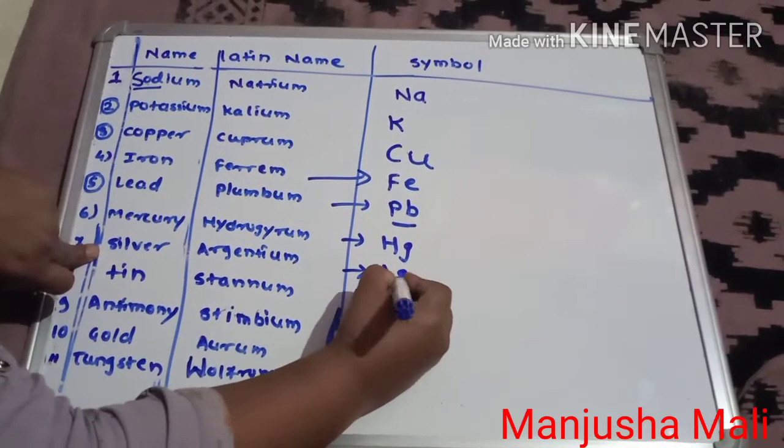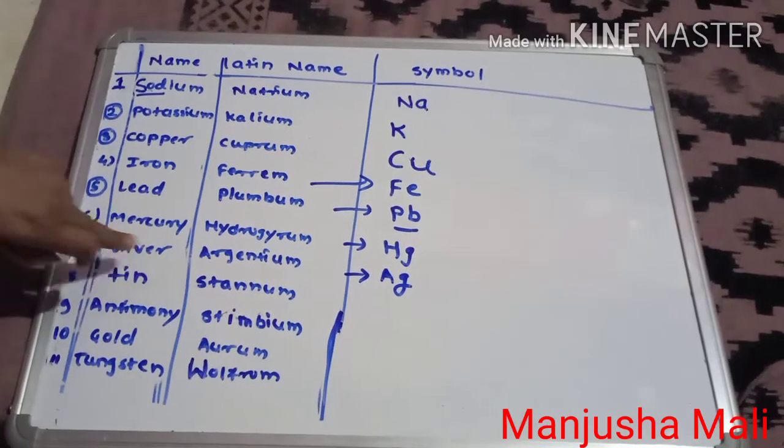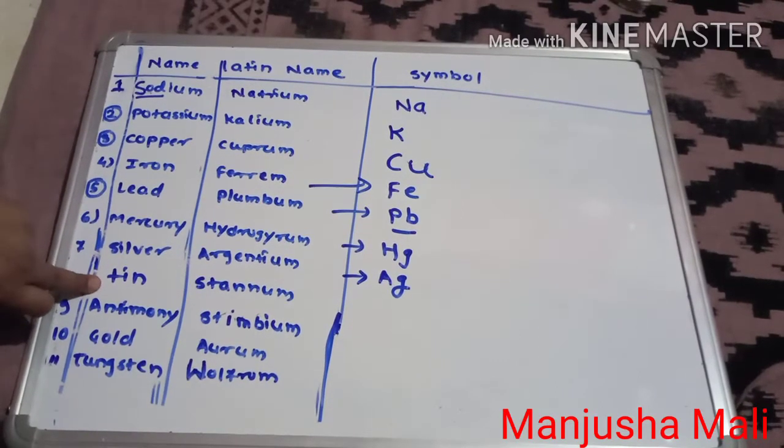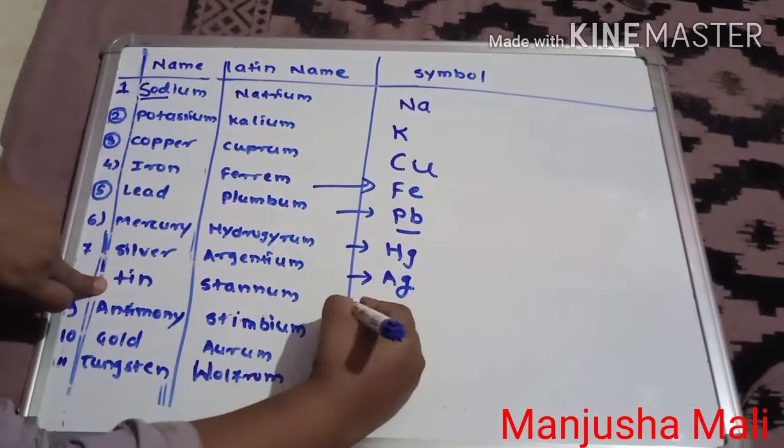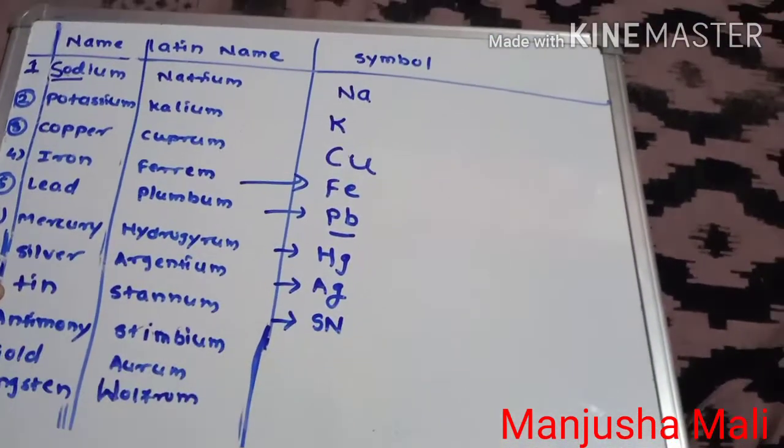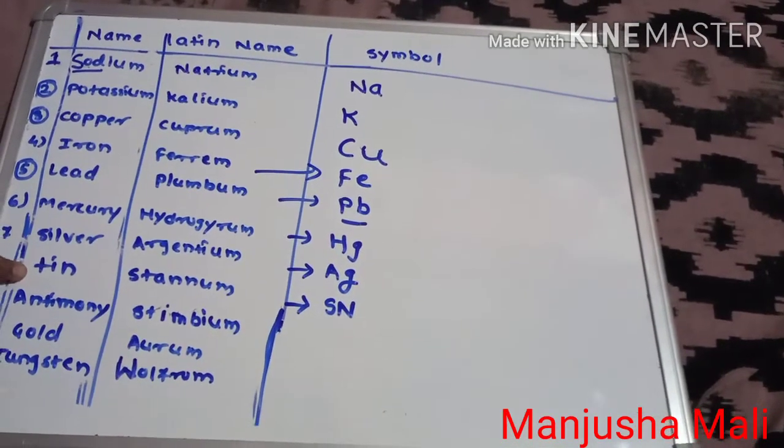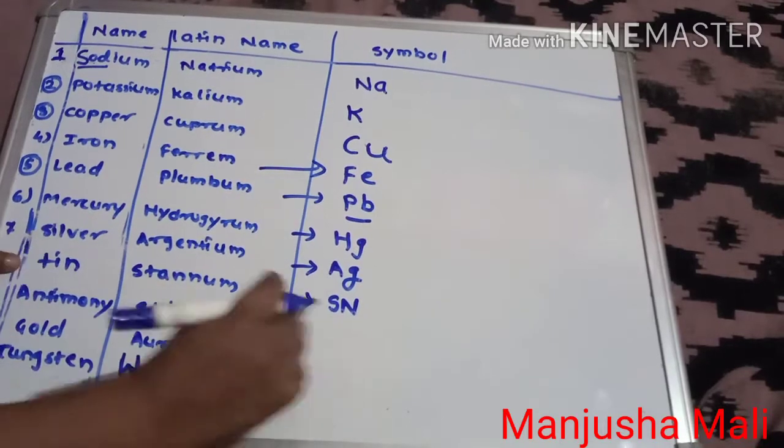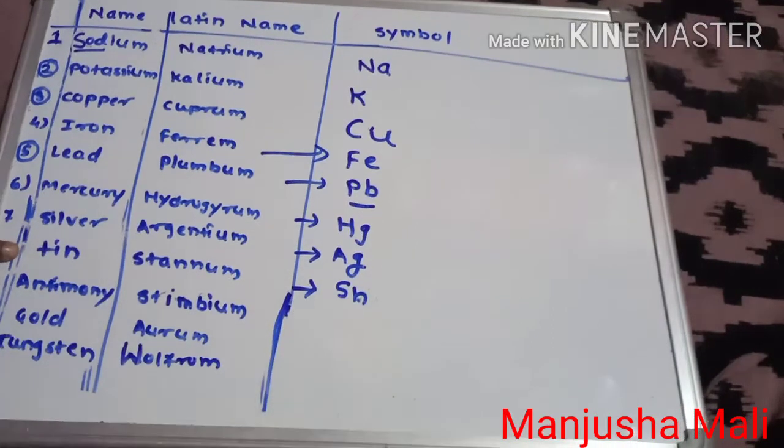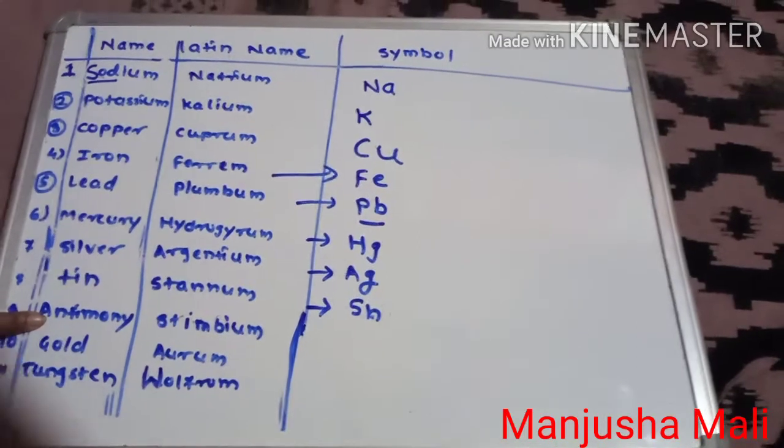Silver. Latin name is Argentum. Symbol of silver is Ag. Tin, it's Stannum as capital S and small N, so Sn is a symbol of tin.